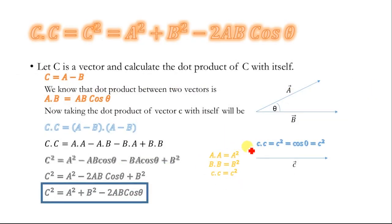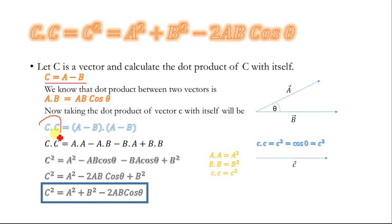Let's suppose we have a vector C equal to a minus b. Taking the dot product of this vector C with itself, we will write it as c dot c.